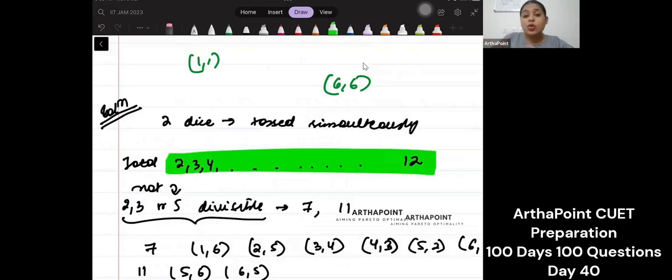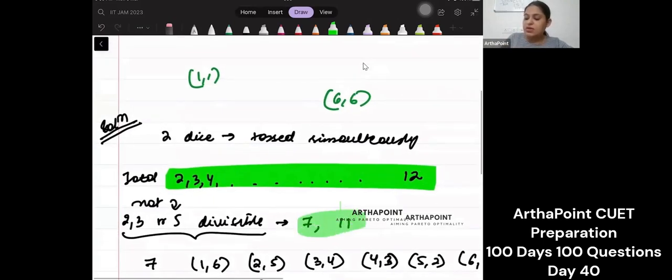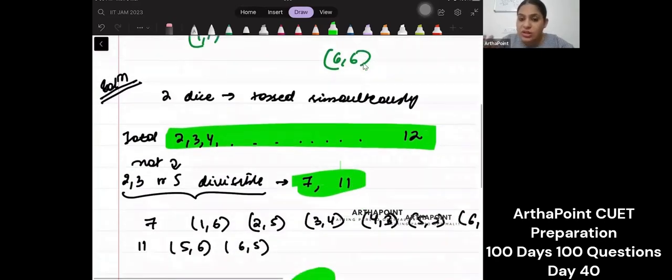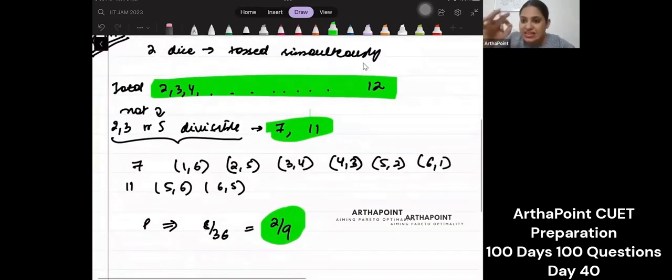Now I don't want it to be divisible by 2, 3, or 5, which means the only numbers left with me will be 7 and 11. I want only those combinations which give me either the sum as 7 or the sum as 11.